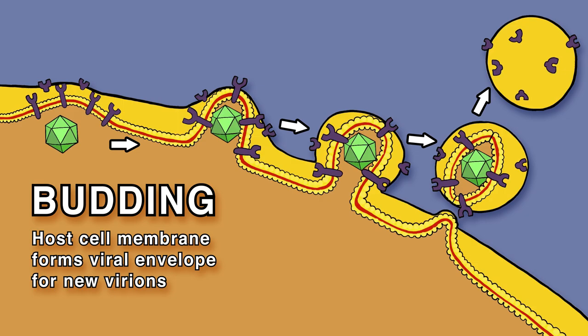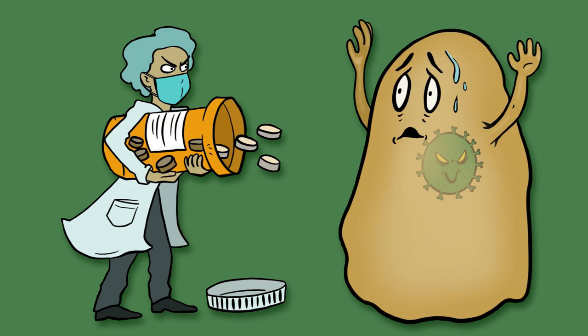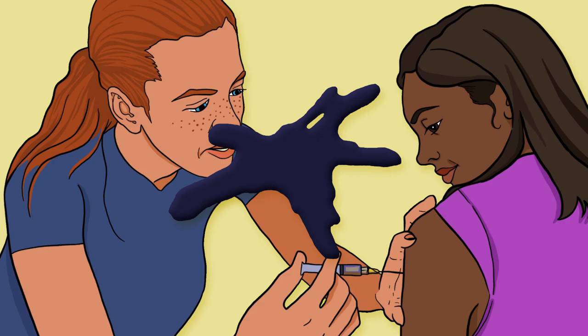Since the host performs most of the steps in viral replication, it's hard to kill a virus without host aggravation. Vaccines are key to stop virus spreading in communities — when enough people get them, we get herd immunity.